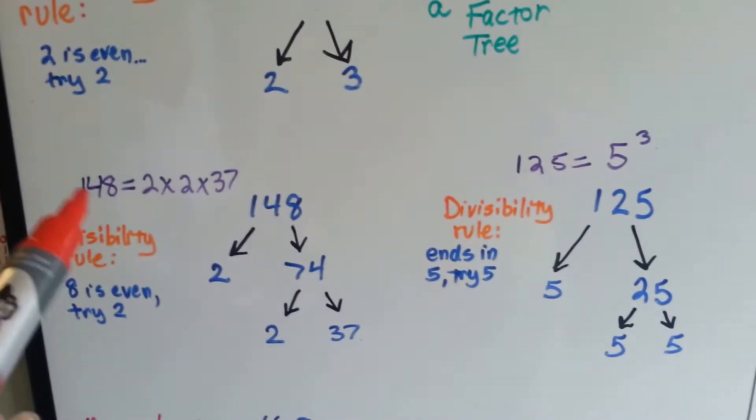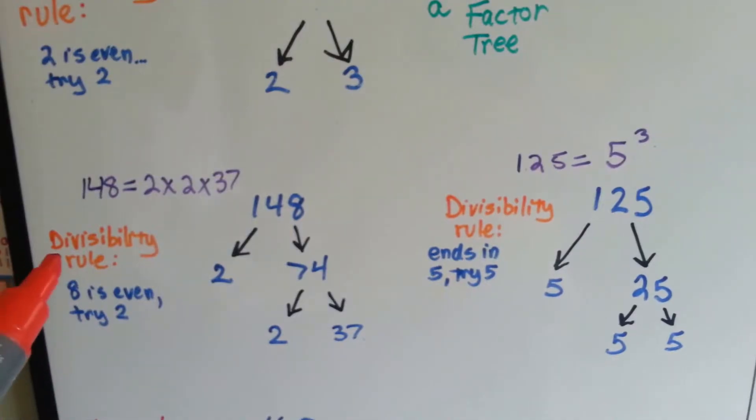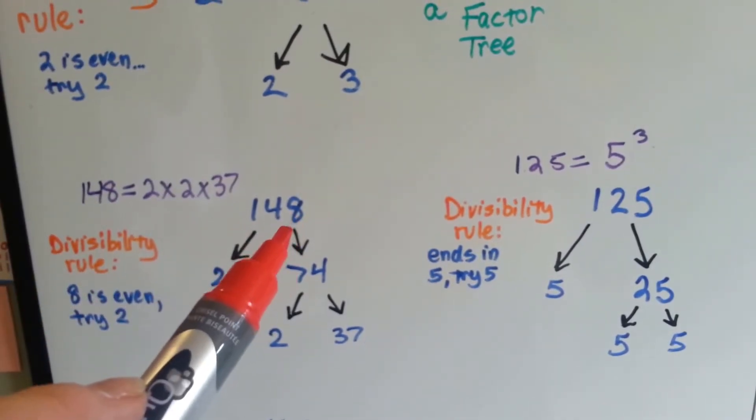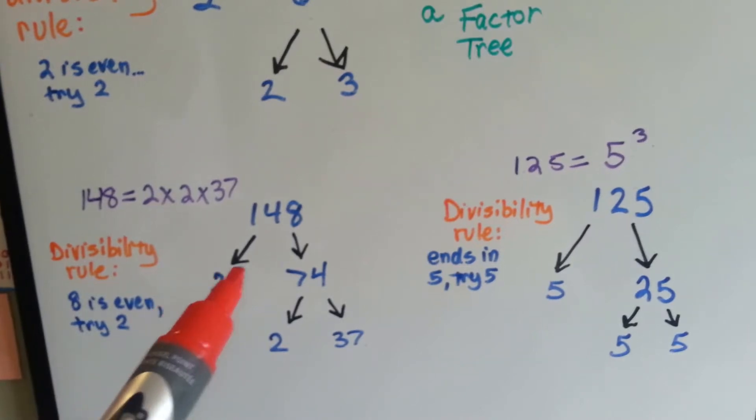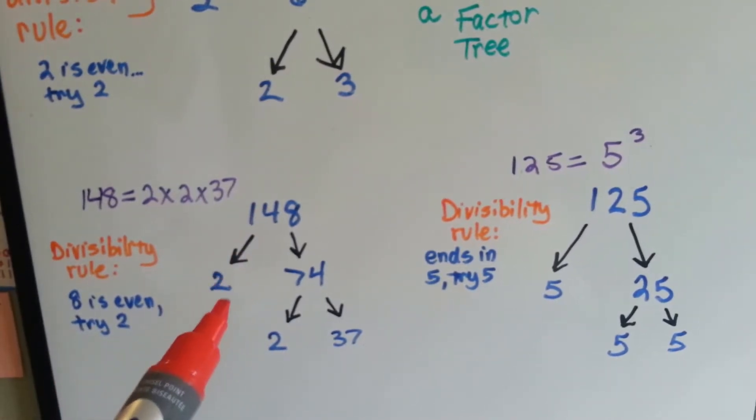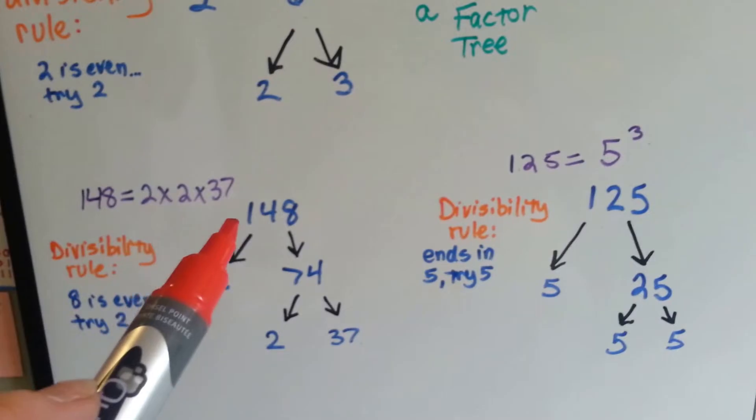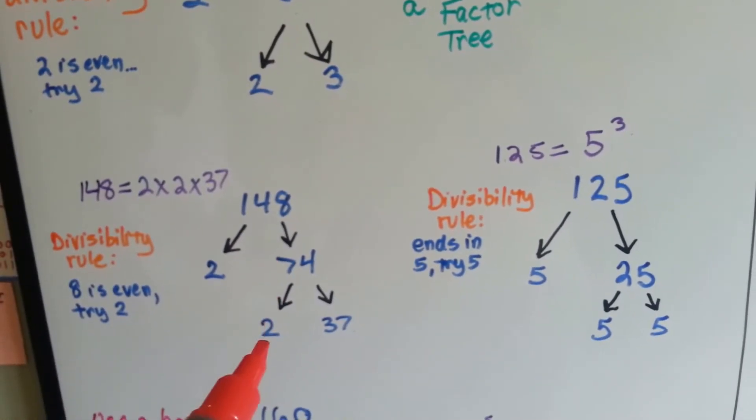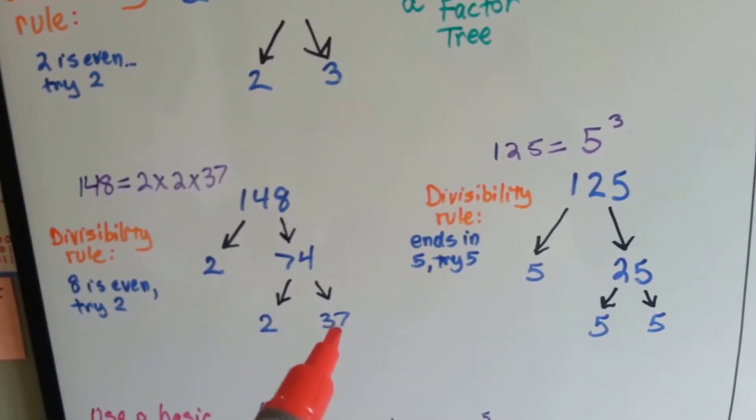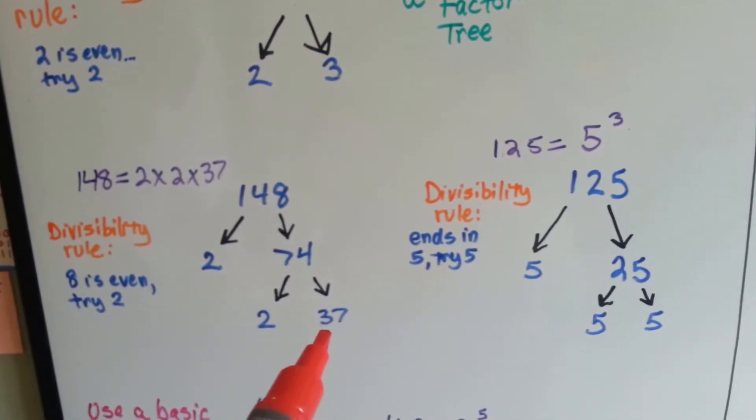If we wanted to do it for 148, we can use the divisibility rule, it ends with an 8, which is even, so we're going to try 2 again. 2 times something is 148. We can do 148 divided by 2 and we get 74. And then we're going to try 2 again, 74 divided by 2 is 37.